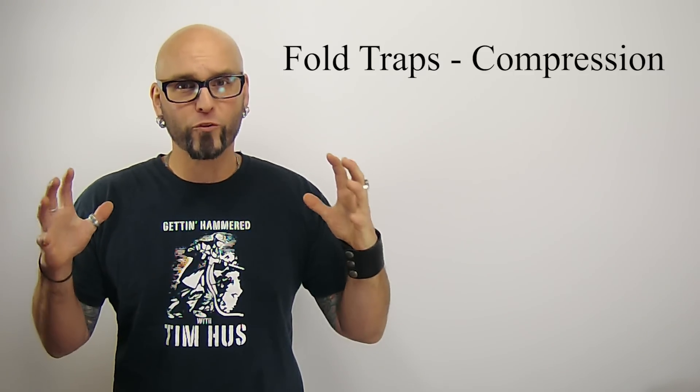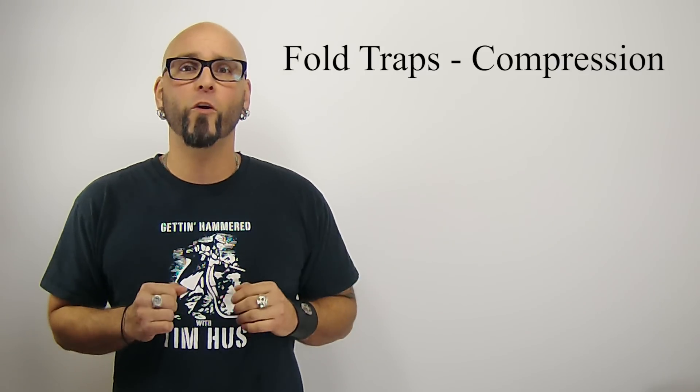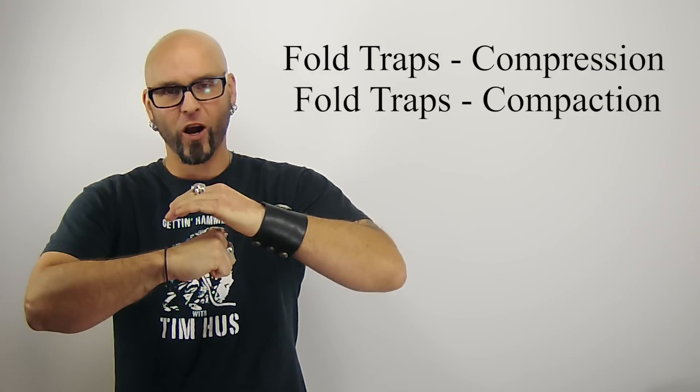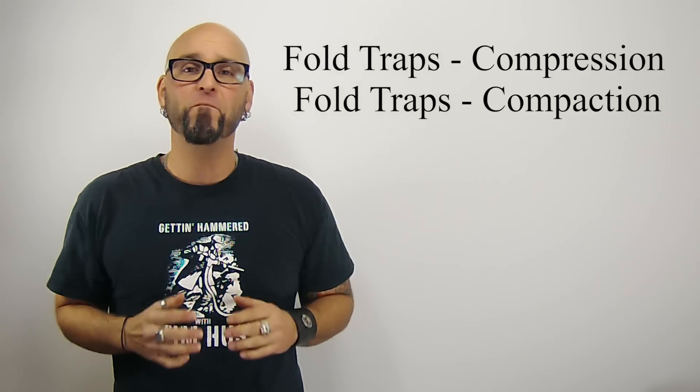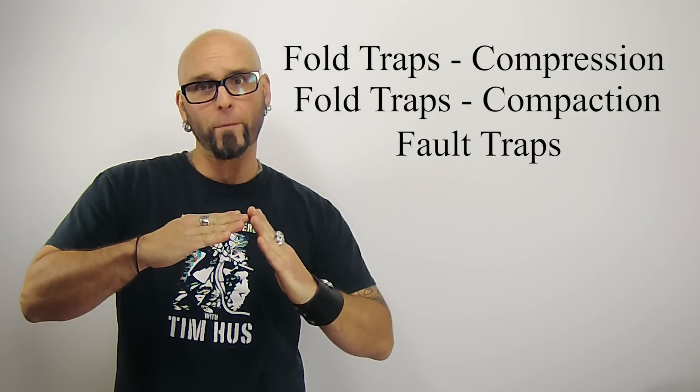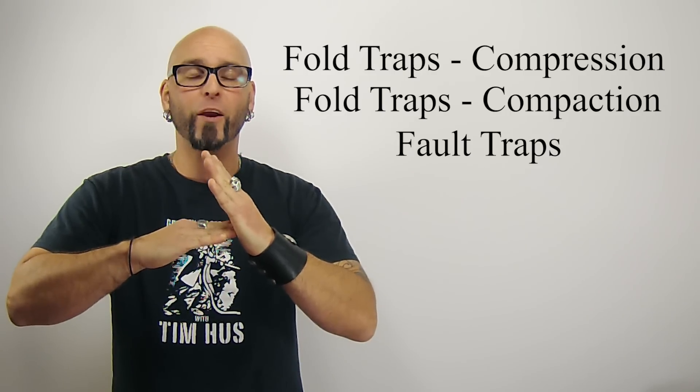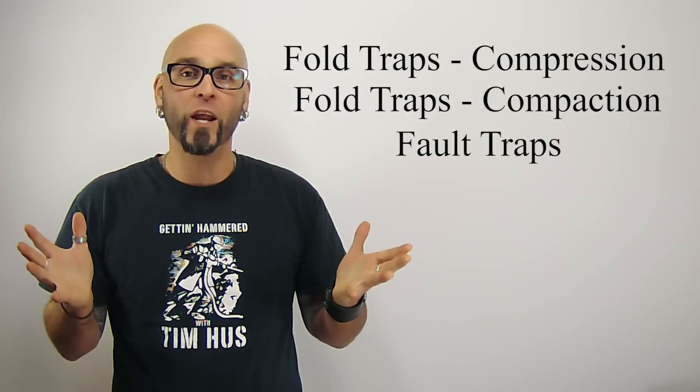There are three main types of structural traps I'm going to talk about. I'm going to talk about fold traps which are due to compression within the earth. I'm going to talk about fold traps which are due to compaction of sediments over uneven topography. And finally, I'm going to talk about fault traps which are dependent on faulted rock creating a good seal to stop migration of hydrocarbons. There is of course a combination of all three, but let's keep it simple.